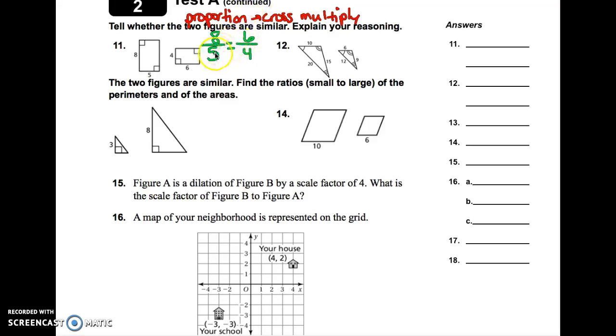Now, cross multiply, you're going to multiply diagonally. 6 times 5 is 30. And then the other one, 8 times 4 is 32. And you're looking to see, are these two numbers equal to each other? And 30 does not equal 32. So your answer for number 11 would be no, they're not similar, because 30 does not equal 32. They are not proportional. And then showing your work there would help back up your explanation as well.